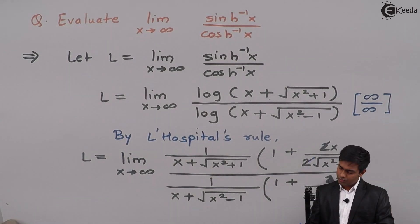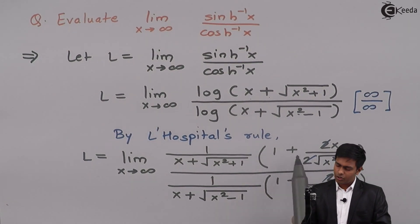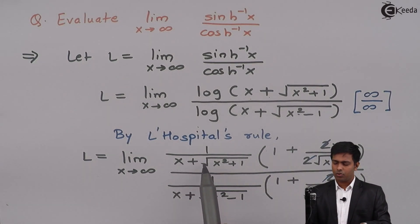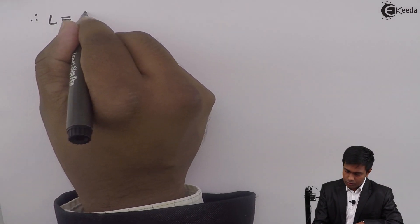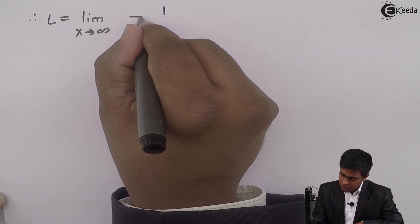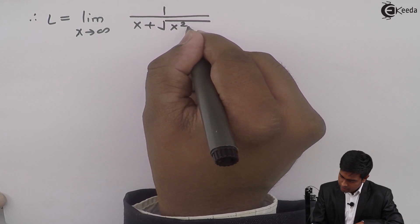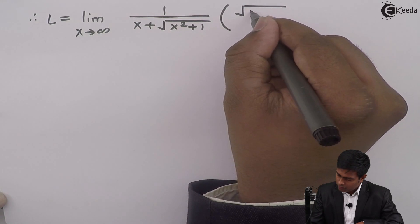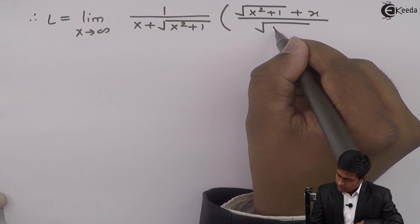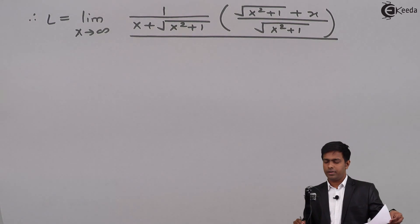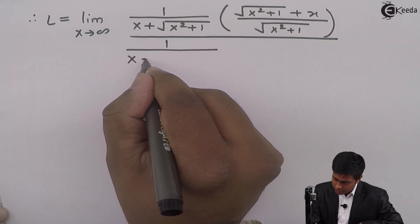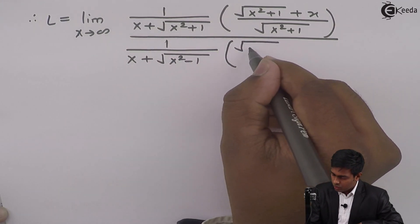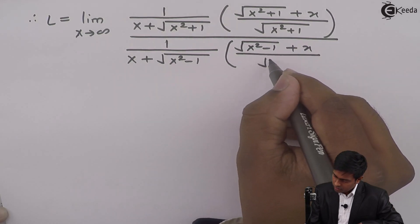Now the factor of 2 can be cancelled. By performing cross multiplication we get 1 times root of x squared plus 1 plus x, and we can cancel that term with x plus root of x squared plus 1. Similarly we can do it for the denominator. After simplification we get L equal to limit x tends to infinity, where the term outside is x plus root of x squared plus 1 and inside the bracket by cross multiplication we get root of x squared plus 1. Similarly in the denominator we get root of x squared minus 1 plus x, with the outside term x plus square root of x squared minus 1, and inside the bracket we get root of x squared minus 1 plus x upon root of x squared minus 1.